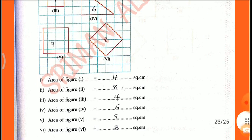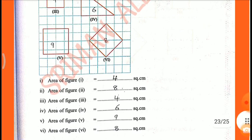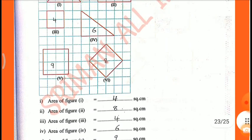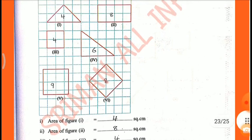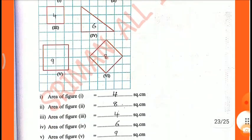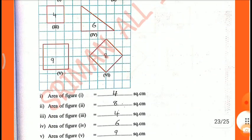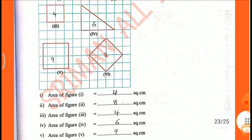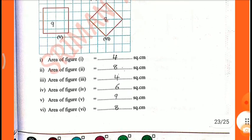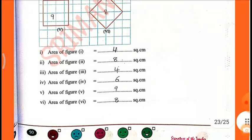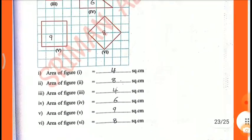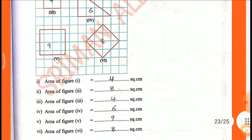Therefore, area of figure 1 is 4 square cm, figure 2 is 8 square cm, figure 3 is 4 square cm, figure 4 is 6 square cm, figure 5 is 9 square cm, and figure 6 is 8 square cm.